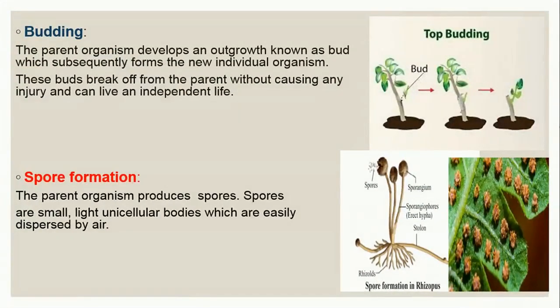The second type is budding. In budding, the parent organism develops an outgrowth known as a bud. You can see what the bud looks like in the image. This bud subsequently forms a new individual organism. One good thing about budding is that the bud can break off from the parent organism without causing any injury, and can live independently on its own. It can also take place in organisms such as Hydra.